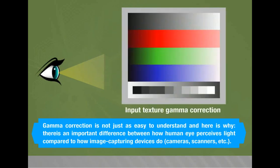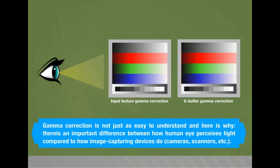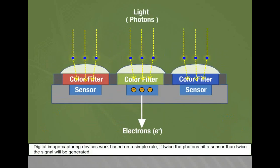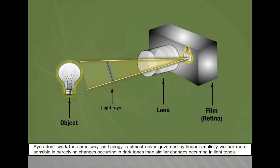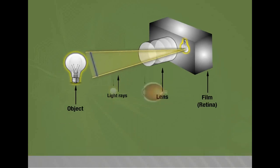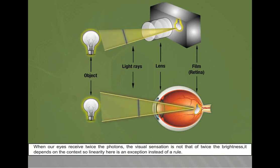Gamma correction is not straightforward to understand. There is an important difference between how the human eye perceives light compared to how image-capturing devices such as cameras and scanners do. Digital image-capturing devices work based on a simple rule: if twice the photons hit a sensor, then twice the signal will be generated. Eyes don't work the same way — as biology is almost never governed by linear simplicity, we are more sensitive to perceiving changes occurring in dark tones than similar changes occurring in light tones. When our eyes receive twice the photons, the visual sensation is not that of twice the brightness — linearity is an exception rather than a rule.